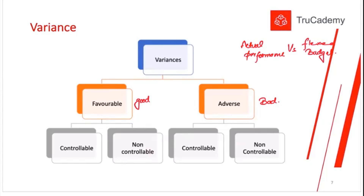A finance manager will only be responsible for the variances that arise in finance — how much cash we were expected to use, how much actual cash we used, and so on. Some variances will be under the control of a manager or a company, but some variances, whether small or big, good or bad, will always be out of the control of a manager.